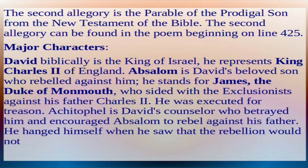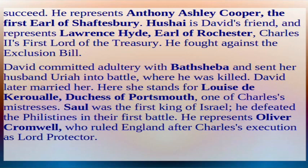Achitophel hanged himself when he saw that the rebellion would not succeed. He represents Anthony Ashley Cooper, the first Earl of Shaftesbury. Hushai is David's friend and represents Lawrence Hyde, Earl of Rochester, Charles II's first Lord of the Treasury, who fought against the exclusion bill. Bathsheba, with whom David committed adultery, stands for Louise de Kéroualle, Duchess of Portsmouth, one of Charles's mistresses.